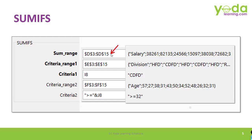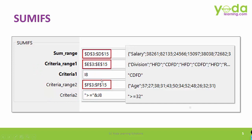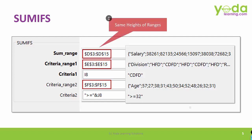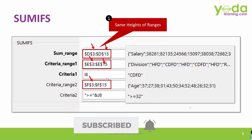For example, one data range talks about salary, another about division headings such as HFD and CDFD, and another about age range. These two pairs should be in sync with each other. Notice one common thing between all three ranges — their heights are the same. If one starts from row 3, it ends at row 15, and that is consistently followed across all ranges. If you don't follow that, your answer will be wrong.